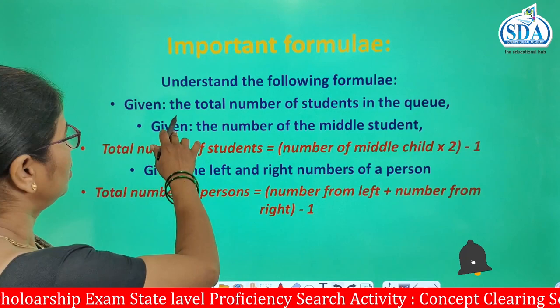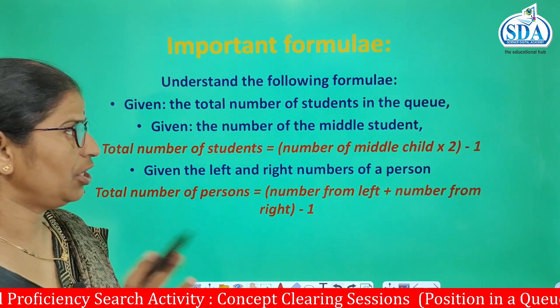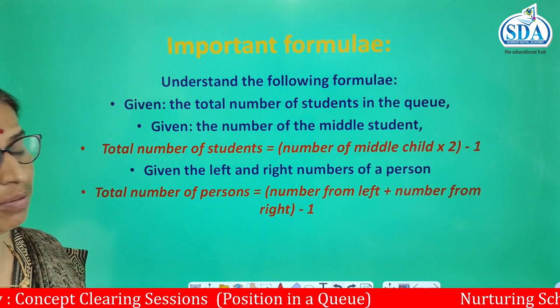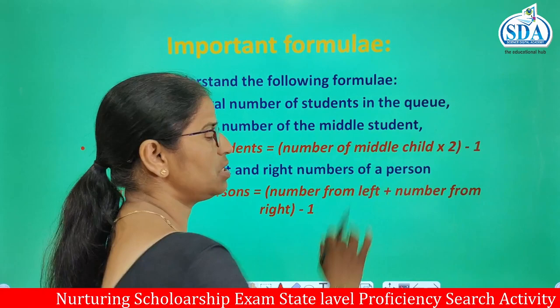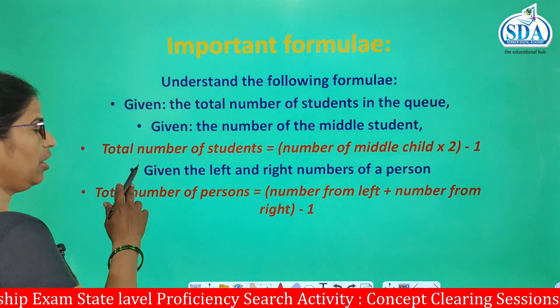Now, to find the total number of students in the queue when the middle student number is given: the total number of students is equal to the number of the middle child multiplied by 2, and then 1 is subtracted from the product.